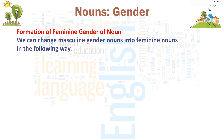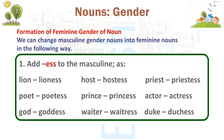Formation of feminine gender of nouns. We can change masculine gender nouns into feminine nouns in the following ways. 1. Adding -ess to the masculine: lion — lioness, poet — poetess, god — goddess, host — hostess, prince — princess, waiter — waitress, priest — priestess, actor — actress, duke — duchess.